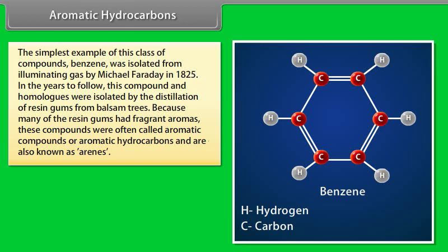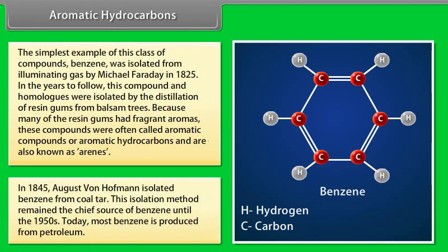In the years to follow, this compound and homologues were isolated by the distillation of resin gums from balsam trees. Because many of the resin gums had fragrant aromas, these compounds were often called aromatic compounds or aromatic hydrocarbons and are also known as arenes. In 1845, August von Hoffman isolated benzene from coal tar. This isolation method remained the chief source of benzene until 1950s. Today, most benzene is produced from petroleum.